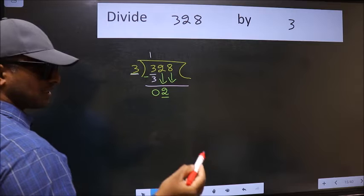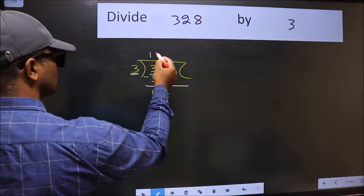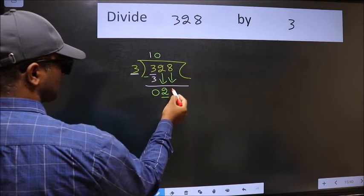And the rule to bring down the second number is we should put 0 here. Then only we can bring this number down.